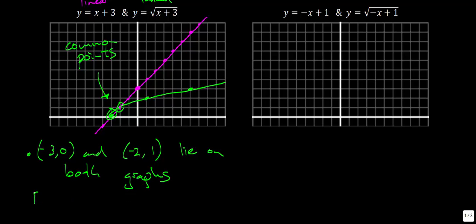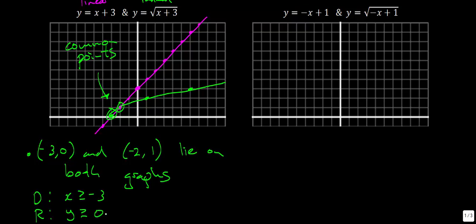For the domain and range of our radical function: the domain — looking at what x values we have — goes from negative 3 in the positive direction, so x must be greater than or equal to negative 3. For the range, we only have positive values since we can't take the square root of negatives, so y must be greater than or equal to 0.